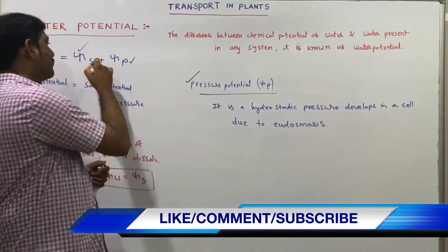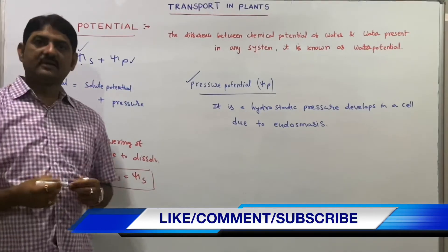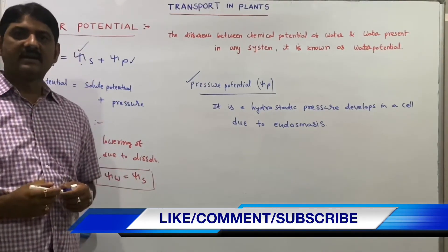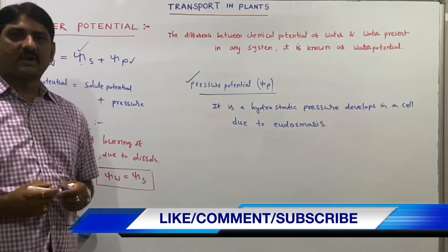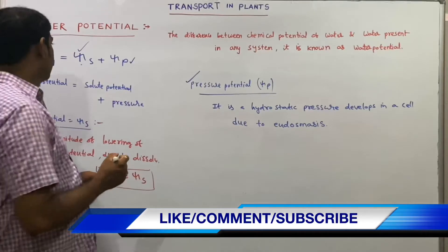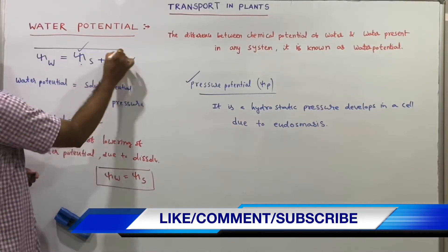Solute potential and pressure potential are the components that determine water potential. The formula is ψw = ψs + ψp.